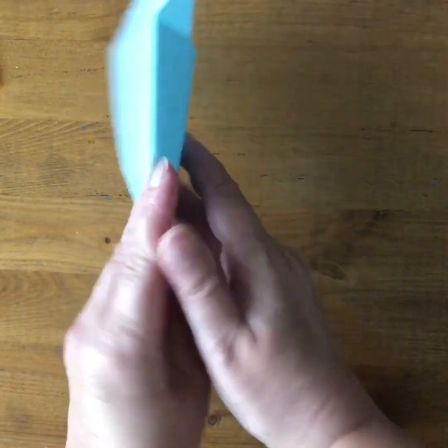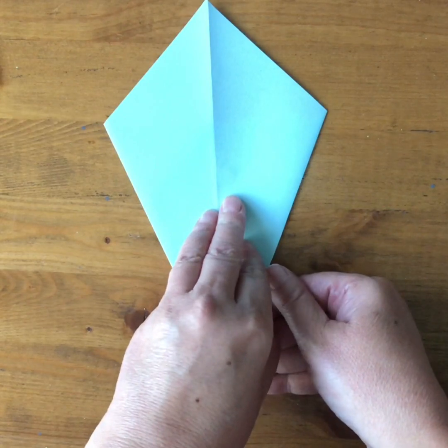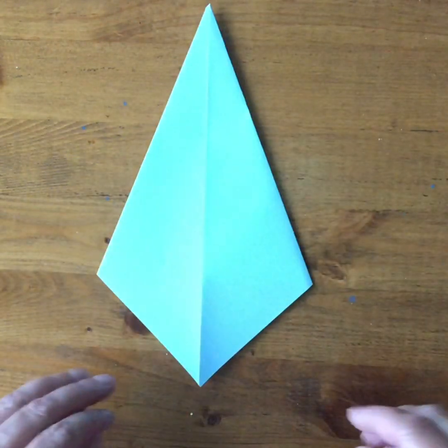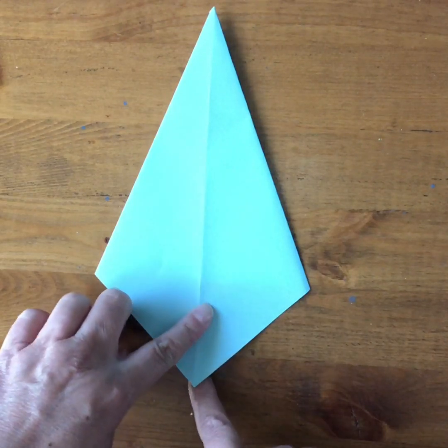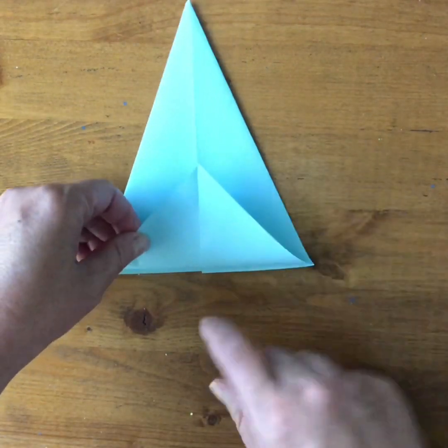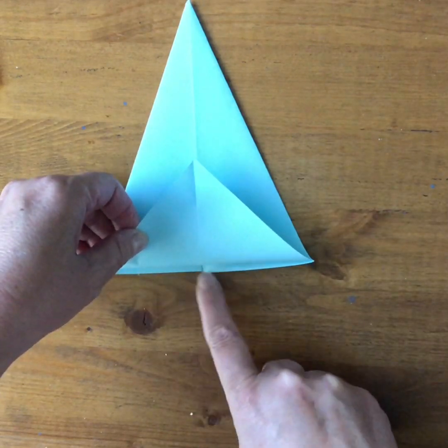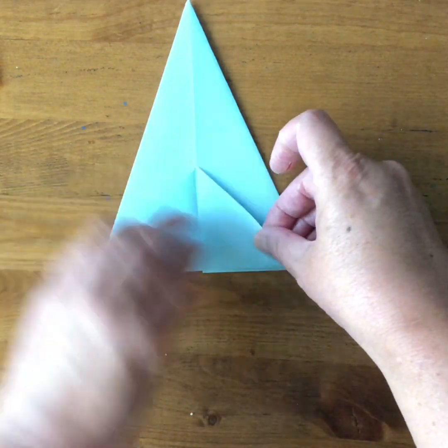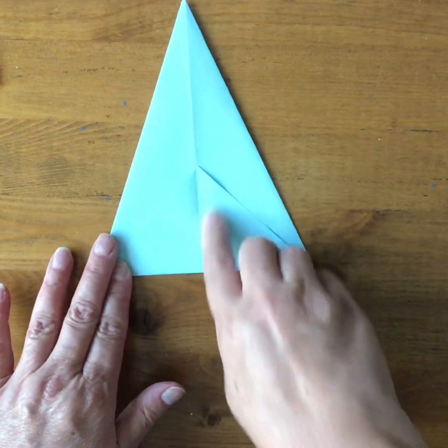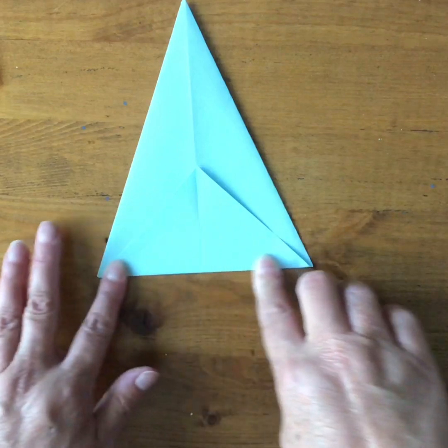I'm going to flip it and then turn it so the point is up. Then I'm going to take this bottom point and fold it up. I stop when I see the other side of the paper coming through and line up across the bottom here, keeping these fold lines lined up as well.